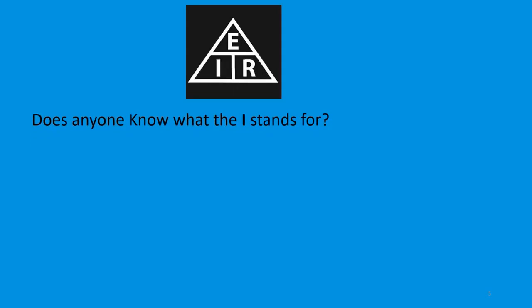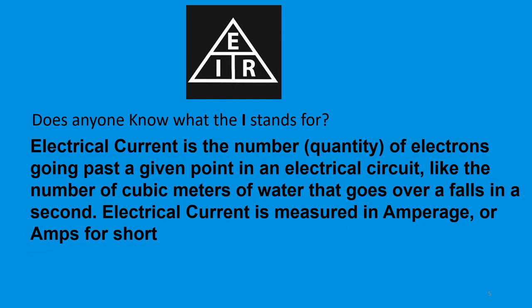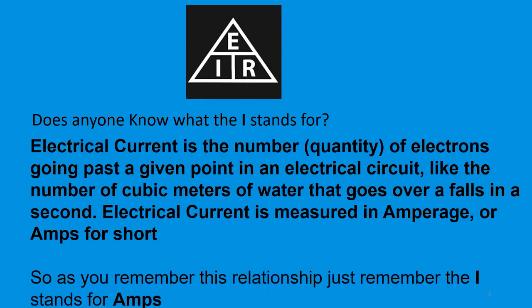Does anyone know what the I stands for? Electric current is the quantity of electrons going past a given point in an electrical circuit. Like the number of cubic meters of water that falls over a falls in a second, electrical current is measured in amperage, or amps for short. So just remember that I stands for amps.